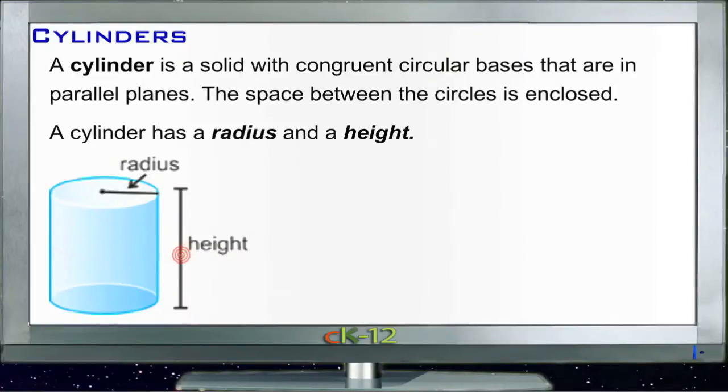However, the calculations end up being really the same. To find the volume of a cylinder, we just take the area of the base and multiply that by the height, just like we did for our polygon shapes. So that's going to be the volume.